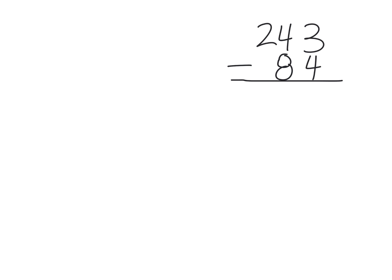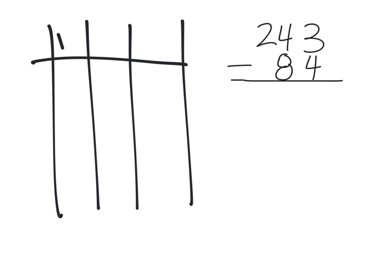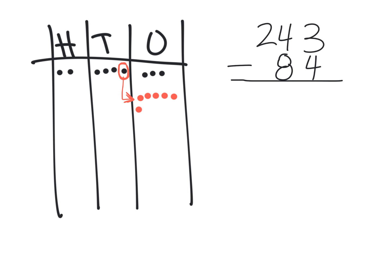Just one more practice. We're going to make our place value chart — hundreds, tens, ones — and model 243. There's our model for 243. Starting with our ones place, you have 3 ones and need to take away 4 ones. You obviously can't do that, so we're going to cash in and exchange one of those tens for 10 ones: 1, 2, 3, 4, 5, 6, 7, 8, 9, 10.